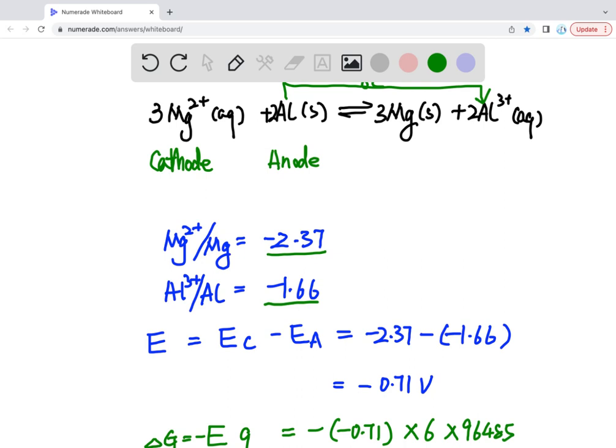So for this reaction, the potential of the cell equals to the potential of the cathode minus the potential of the anode, so it's minus 2.37 minus minus 1.66, so you get minus 0.71 volts.